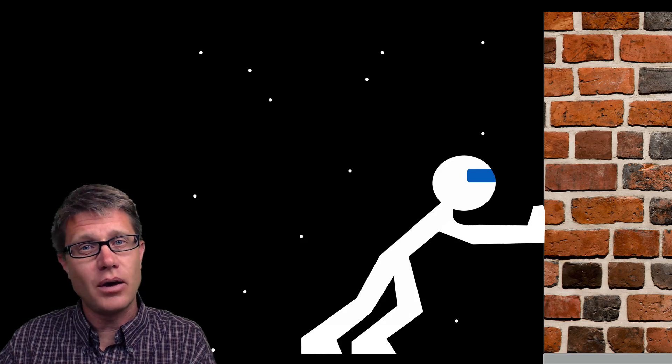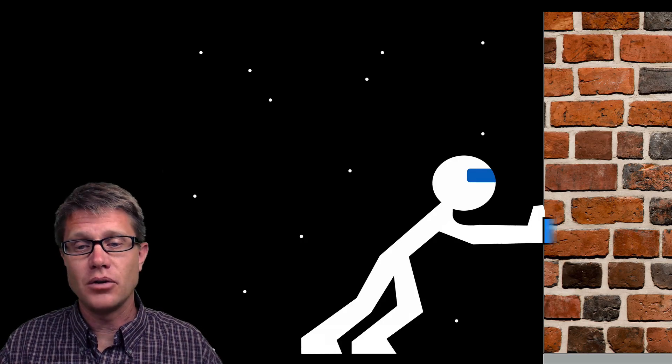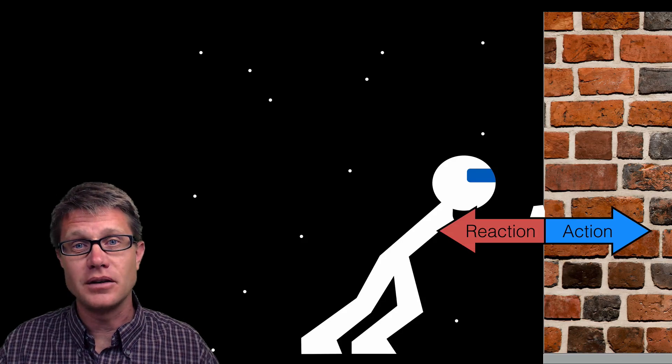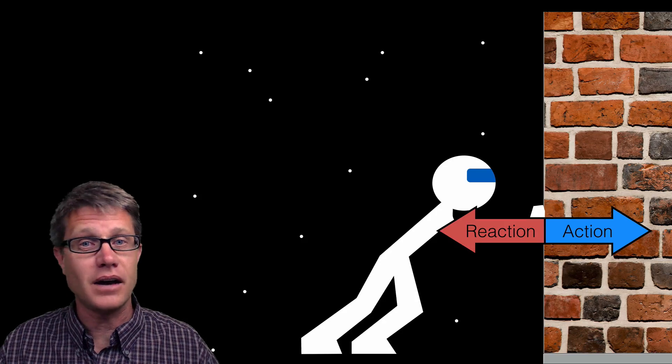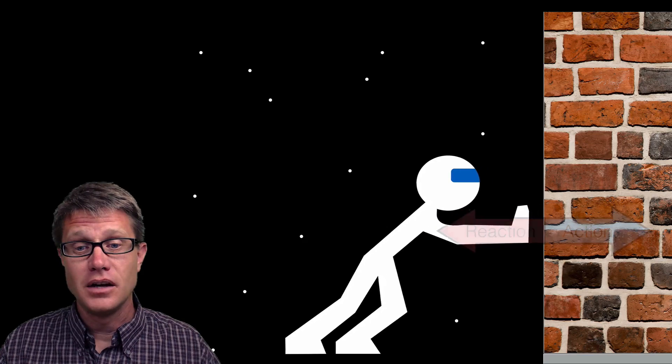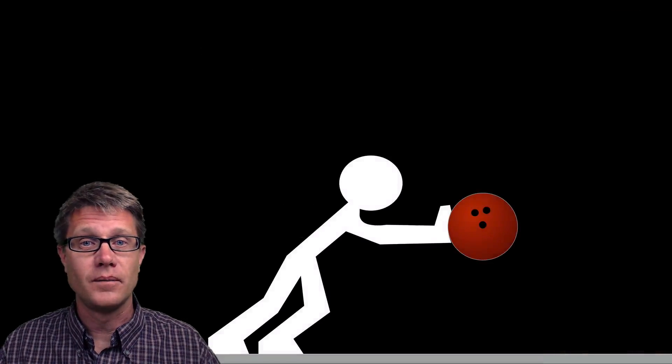Now let us put you in space and do the same scenario, making sure that the wall does not move. You apply a force into the wall, it applies an opposite and equal force back on you. Since there is no ground to push against, you are simply going to quickly accelerate and then coast away from the wall.